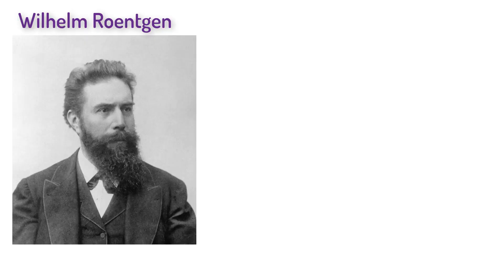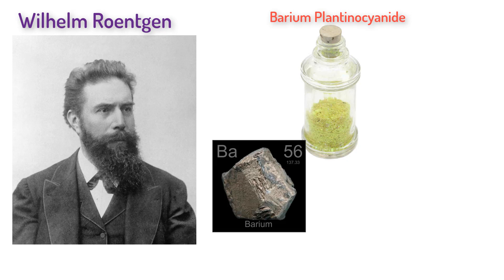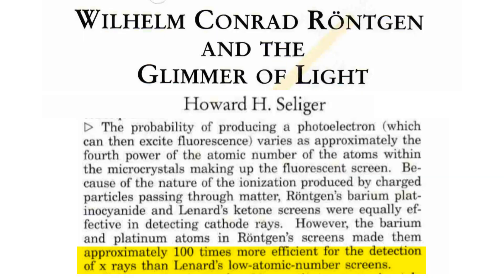Now, Röntgen had a different phosphor that he was thinking of using with Leonard's tube. Röntgen used a barium-plantinoside phosphor that had barium, atomic number 56, and platinum, atomic number 78, which, according to an article published in Physics Today, was approximately a hundred times more efficient for the detection of X-rays than Leonard's low atomic number screen. This is not to imply that Röntgen thought a heavier element would discover a new type of ray. It's more that he had a new type of phosphor and wanted to see what would happen.